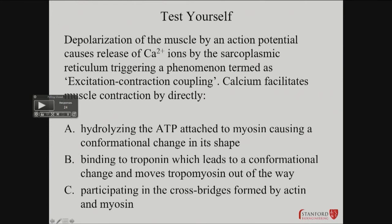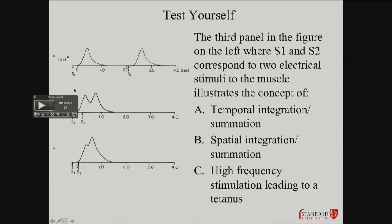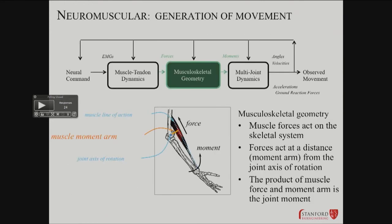By the way, troponin is also relevant to cardiac muscle as well as skeletal muscle. You actually have a loss of troponin into the blood — that's one way you can detect heart attacks. Damage to heart muscle leads to release of troponin, and that's actually one of the most sensitive current tests for cardiac ischemic heart attack.